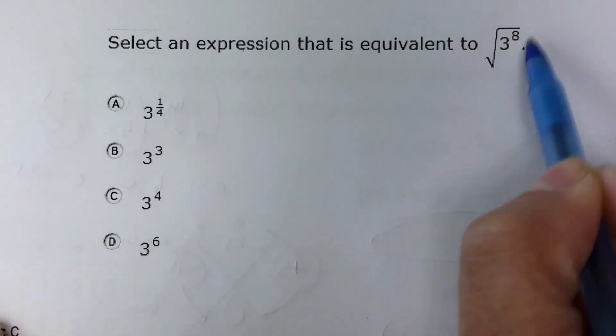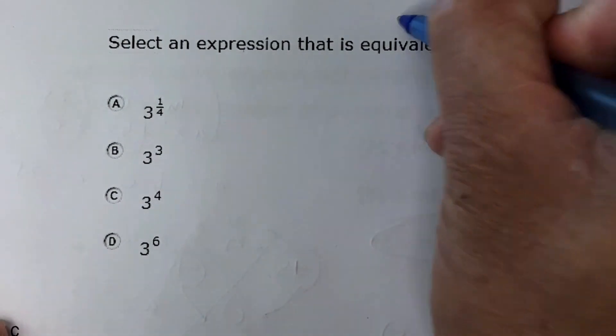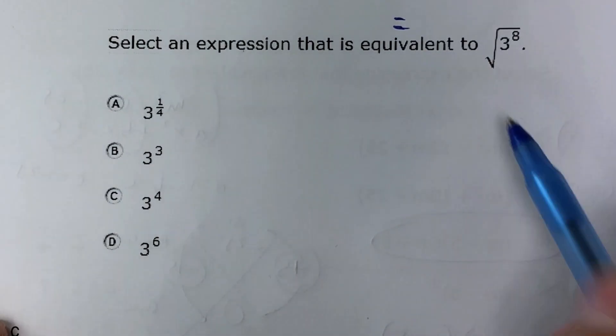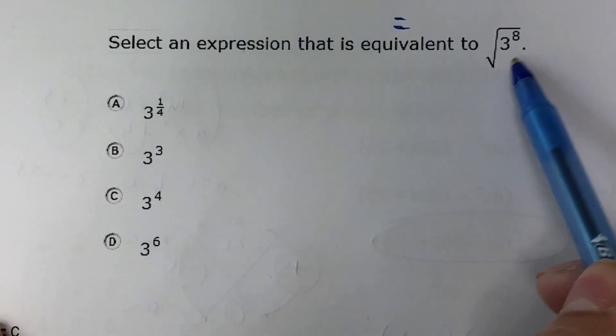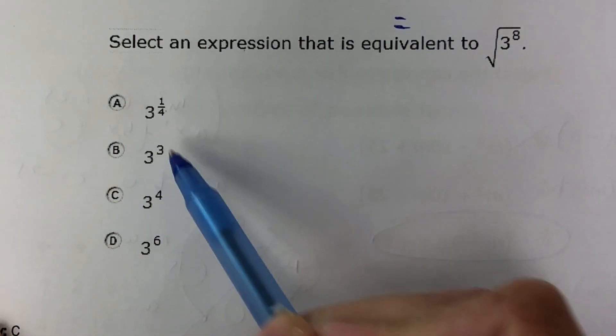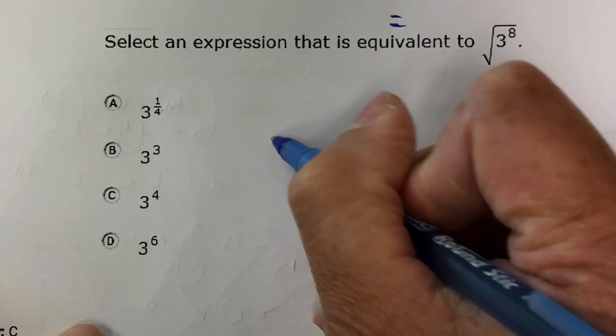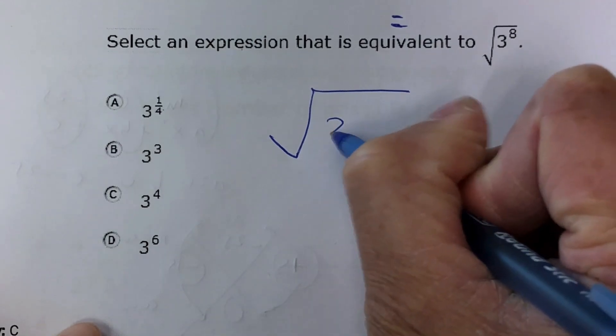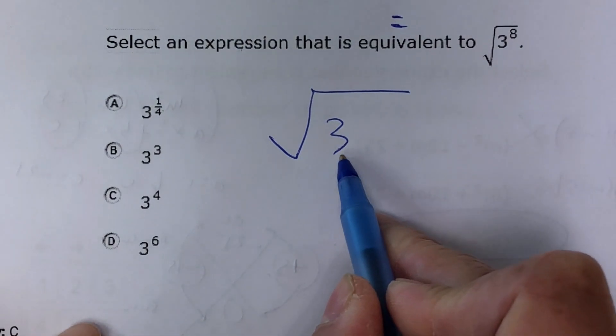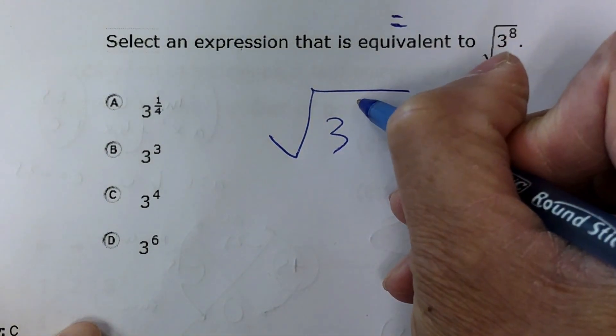An expression has no equal sign, and is equivalent means we're just looking for something that is equal to this. So they're saying, is the square root of 3 to the 8th power equal to this one, this one, this one, or this one? Good thing is we know that one of these are our answers. So I'm going to write this a little bit larger. Here is my base for my exponent, and my exponent here is 8.